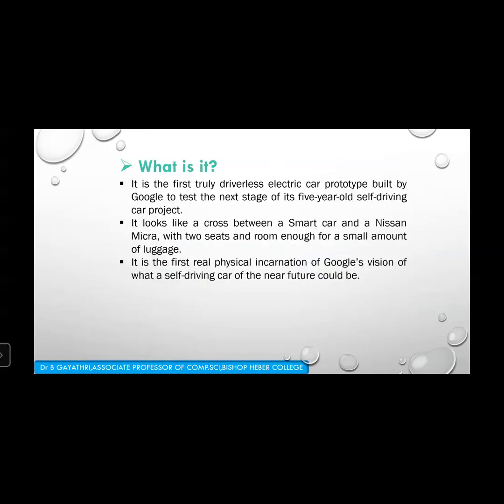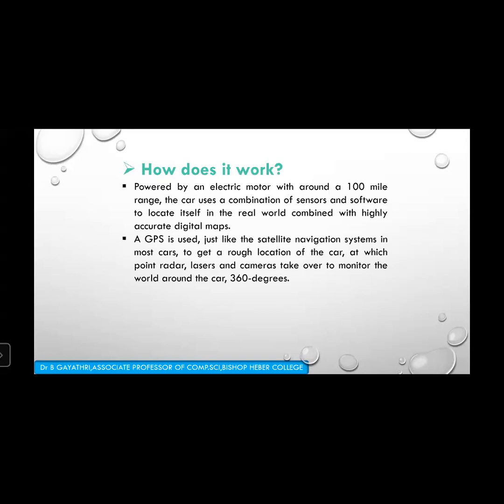The Google self-driving car is the first truly driverless electric car prototype built by Google to test the next stage of its five-year self-driving car project. It looks like a cross between a Smart car and a Nissan Micra, with two seats and room for a small amount of luggage. It is the first physical incarnation of Google's vision of what a self-driving car of the near future could be.